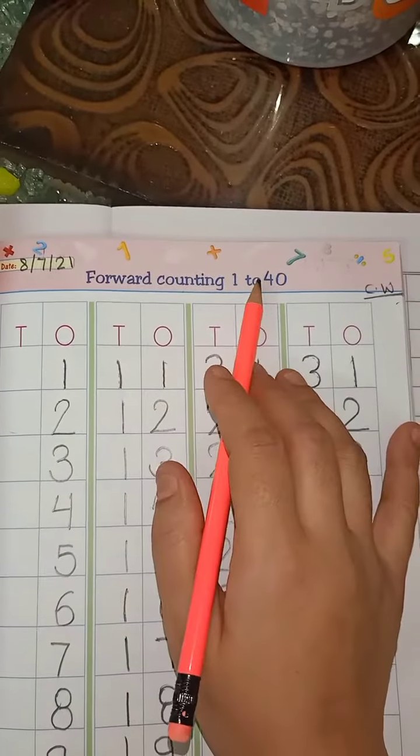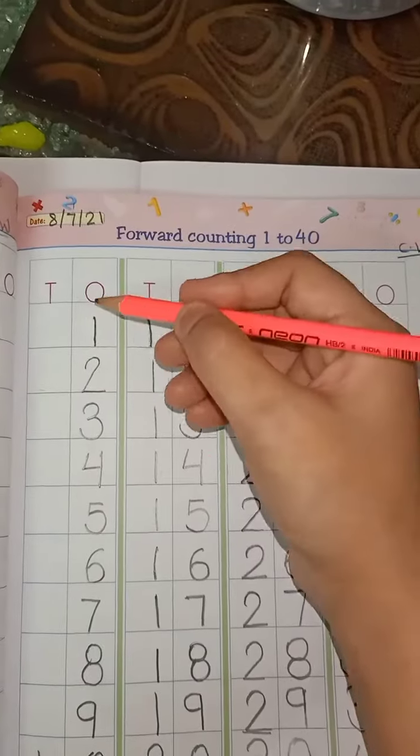So bachche, today we will do forward counting 1 to 40. So, let's start.